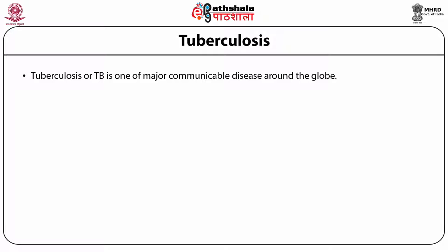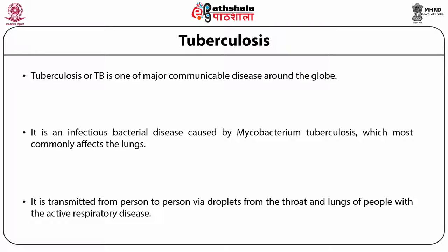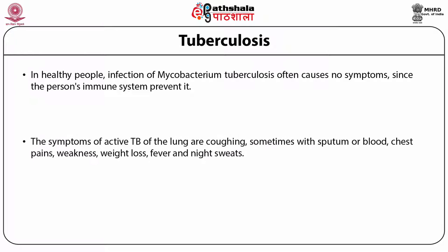Tuberculosis or TB is one of the major communicable diseases around the globe. It is an infectious bacterial disease caused by Mycobacterium tuberculosis, which most commonly affects the lungs. It is transmitted from person to person via droplets from the throat and lungs of people with active respiratory disease. In healthy people, infection with Mycobacterium tuberculosis often causes no symptoms since the person's immune system prevents it. The symptoms of active TB of the lung are coughing, sometimes with sputum or blood, chest pains, weakness, weight loss, fever and night sweats.